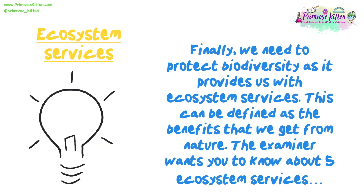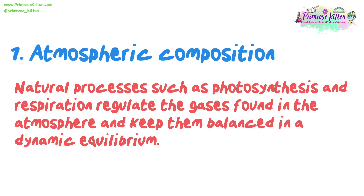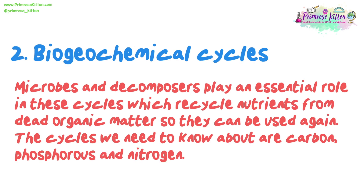Finally, we need to protect biodiversity as it provides us with ecosystem services, defined as the benefits that we get from nature. The examiner wants you to know about five ecosystem services. Number one: atmospheric composition — natural processes such as photosynthesis and respiration regulate the gases found in the atmosphere and keep them balanced in a dynamic equilibrium. Number two: biogeochemical cycles — microbes and decomposers play an essential role in these cycles, which recycle nutrients from dead organic matter so they can be used again. The cycles we need to know about are carbon, phosphorus and nitrogen.